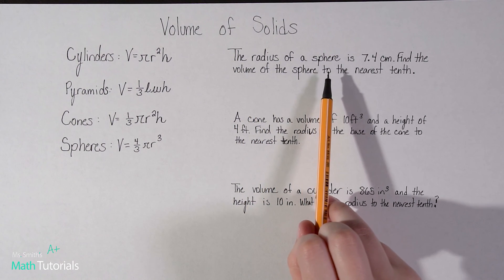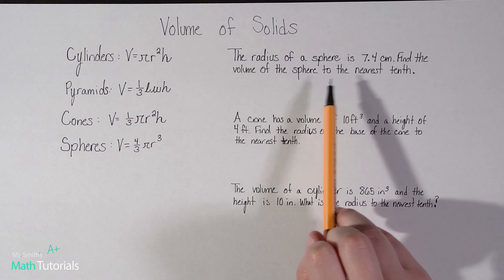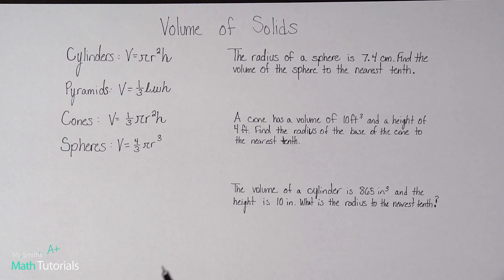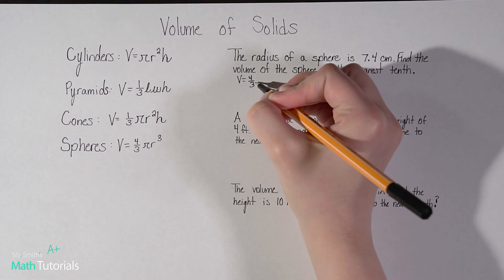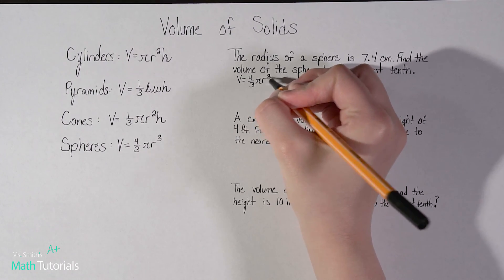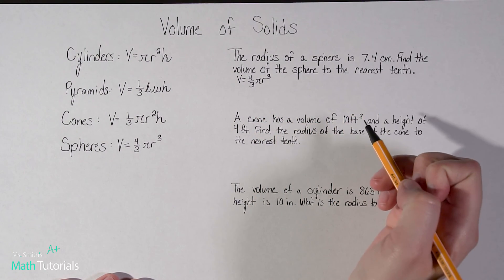So the radius of a sphere is 7.4 centimeters. Find the volume of the sphere to the nearest tenth. So that sounds kind of scary, to me at least. It's a lot of information. It seems like anytime you're talking about a 3D object with radiuses and volume, it just seems like a lot. But it's really not too bad. We're just going to follow the formula that it's given us. So we're talking about spheres. So we're looking at this formula right here. So the formula we're going to be using is V equals four thirds times pi times R cubed.